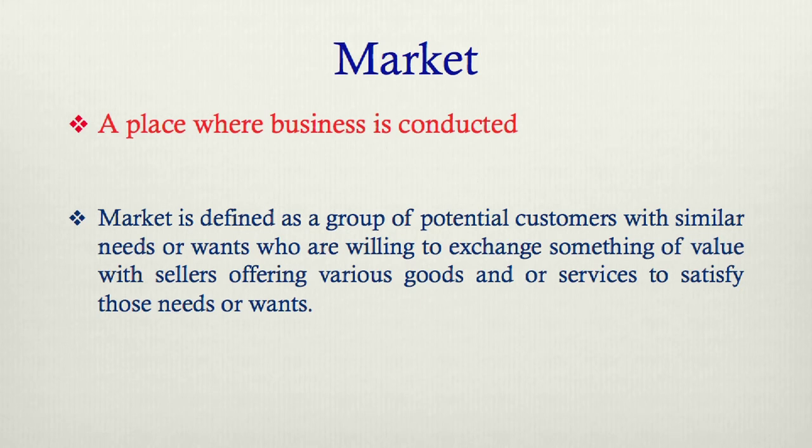For example, in the bath soap market, some may be interested in herbal products only — neem soap or herbal toothpaste — while others may be interested in clove oil-based products like Promise, or Colgate Herbal, or Colgate. These are different examples where the set of consumers will have similar kinds of needs or wants, and ultimately they will be engaged in an exchange process in which the marketer offers the product and the consumer makes the payment.